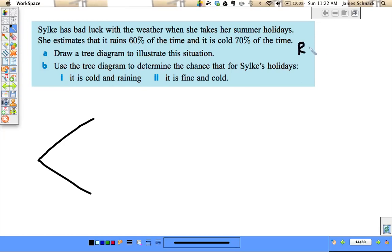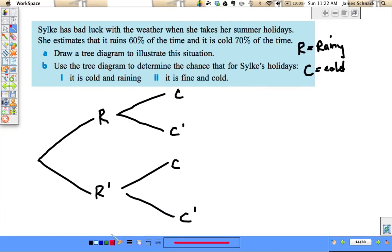So drawing a tree diagram. I'm going to say R is rainy and C is cold. And you really need to define these variables that you're using. So it's either rainy or it's not rainy, and after that it's either cold or not cold. Now let's fill in our probabilities. It's rainy 60% of the time and that means it's not rainy 40% of the time. It's cold 70% of the time and not cold 30% of the time. So I've got my tree diagram labeled with my probabilities.